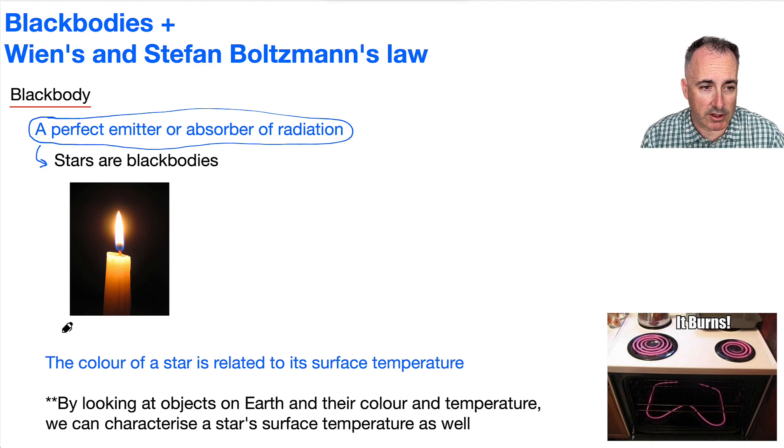I think that's a piece here that we need to know. And it turns out, like I said, is by looking at objects on Earth, for example, and their color and temperature, we can characterize a star's surface temperature as well.